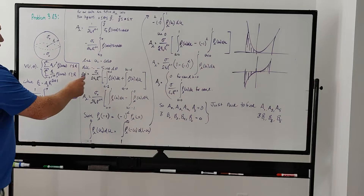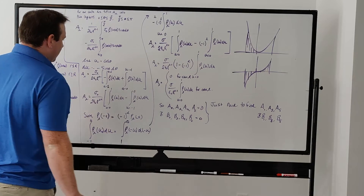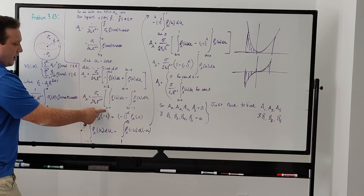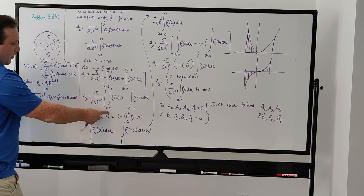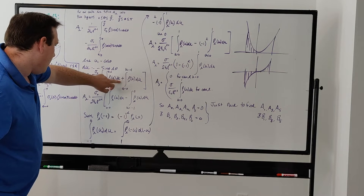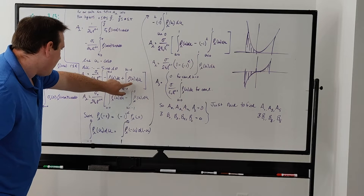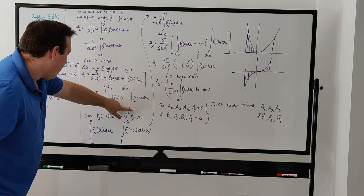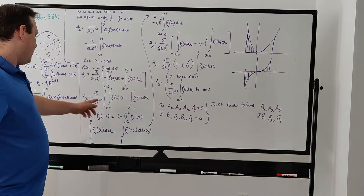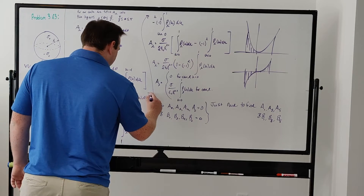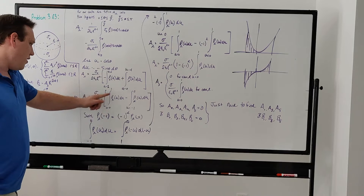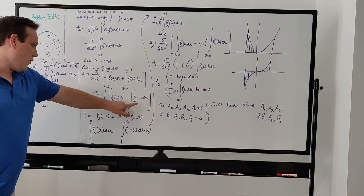Then I use the negative sign to flip the bounds on the first integral, and also bring out a negative sign to flip the bounds on the second integral. All I did in this step was flip the bounds on the two integrals. So now the first integral goes from 0 to 1, and the second goes from negative 1 to 0.